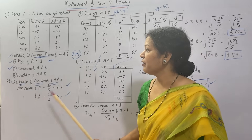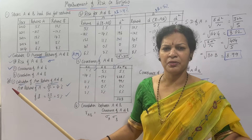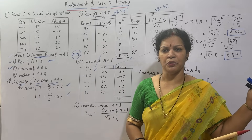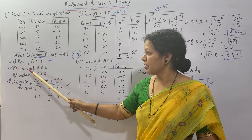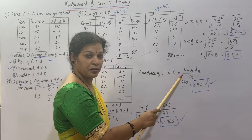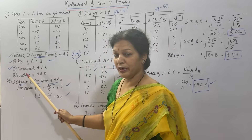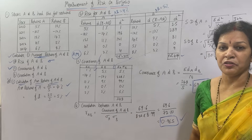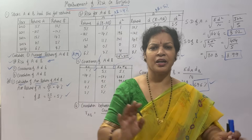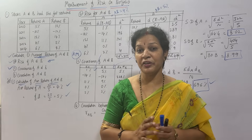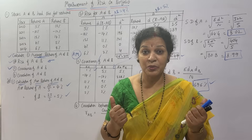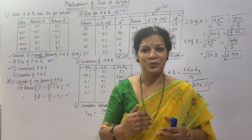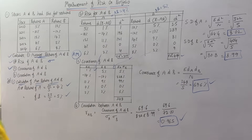Let me give you a recap. We calculated four things: one, average returns using simple arithmetic mean; two, risk of A and B using standard deviation (root of sigma D-squared by N); three, covariance of A and B using sigma DA × DB by N; four, correlation using covariance divided by (SD_A × SD_B). Same pattern problems — check your textbook and start working out. Next class we will work out one more different problem. You can expect this in the examination. Stay connected, don't forget to share these videos. See you in the next class. Good luck.